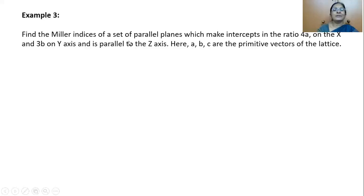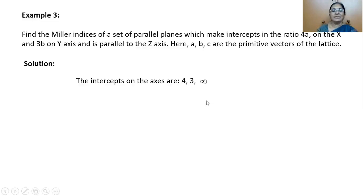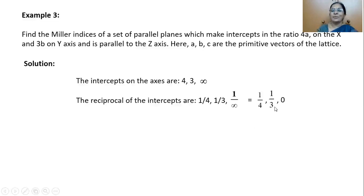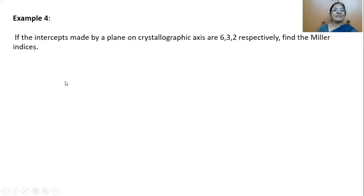Next problem: find the Miller Indices of a set of parallel planes which make intercepts 4A on the X axis, 3B on the Y axis, and are parallel to the Z axis. A, B, C are primitive vectors of the lattice. Write the intercepts: 4, 3, and ∞. Reciprocals: 1/4, 1/3, 0. Find the LCM — take 12. In 12: 4 goes 3 times, 3 goes 4 times, and 0 remains 0. So the Miller Indices for the given plane are (3 4 0).